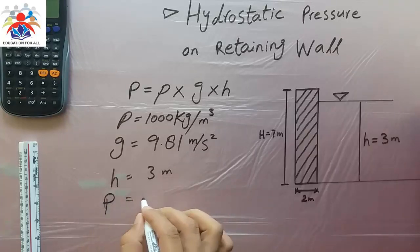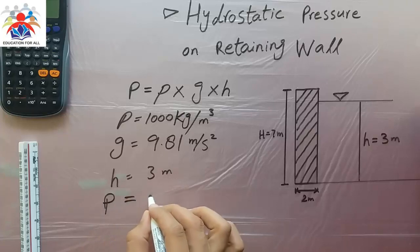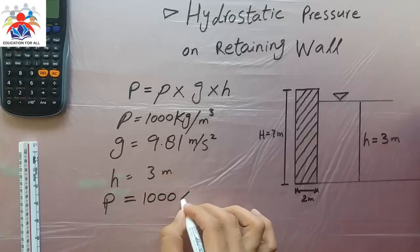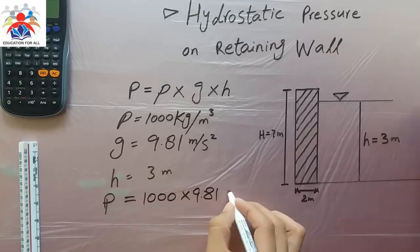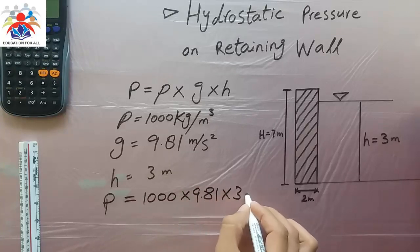So the hydrostatic pressure is equal to 1000 multiplied by 9.81 multiplied by 3 meters.